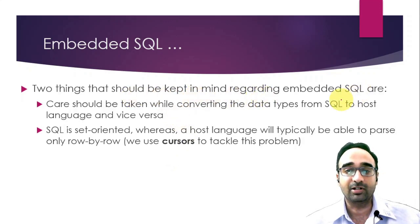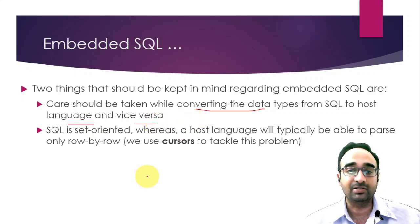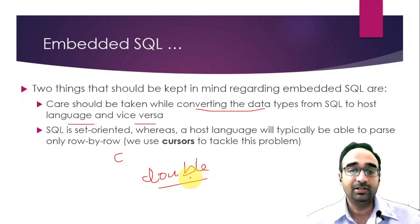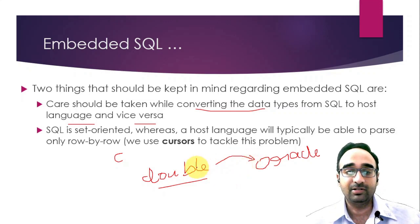Whenever you are using Embedded SQL - that is, writing SQL statements in a programming language - you should take care of two things. The first one is converting data types between SQL and the programming language, and vice versa. For example, your programming language might support the data type 'double' (like C language), but this data type might not be supported by your DBMS, such as Oracle. So whenever you are inserting this data into the DBMS, you should convert it to another data type supported by Oracle, maybe 'float'.